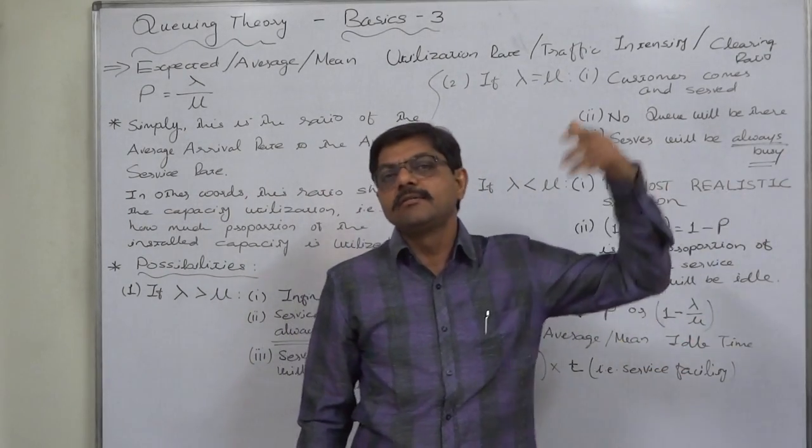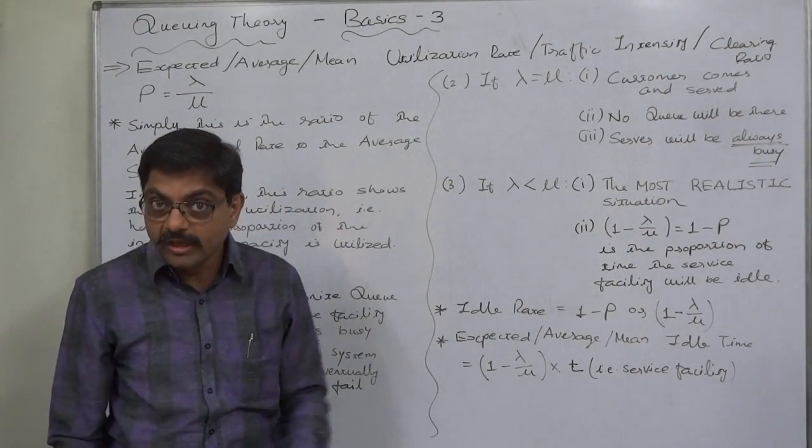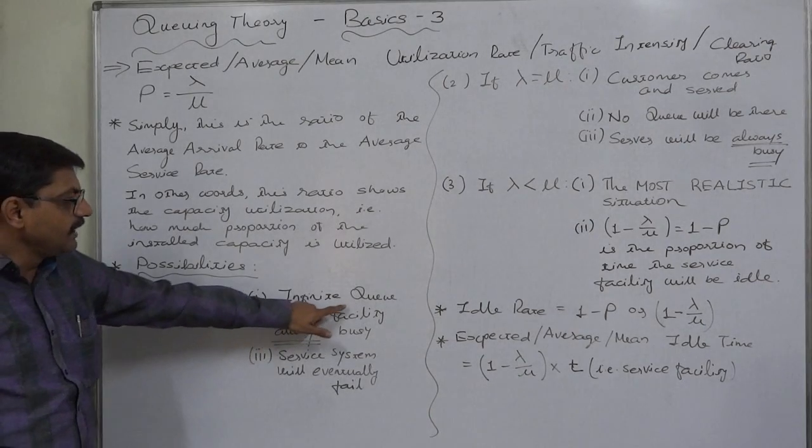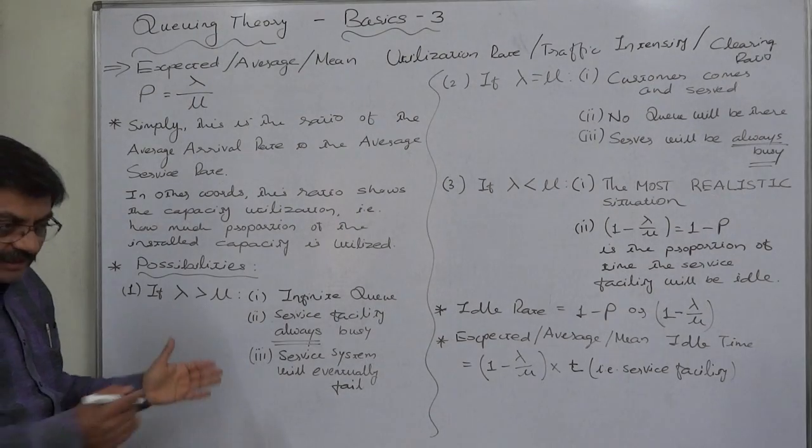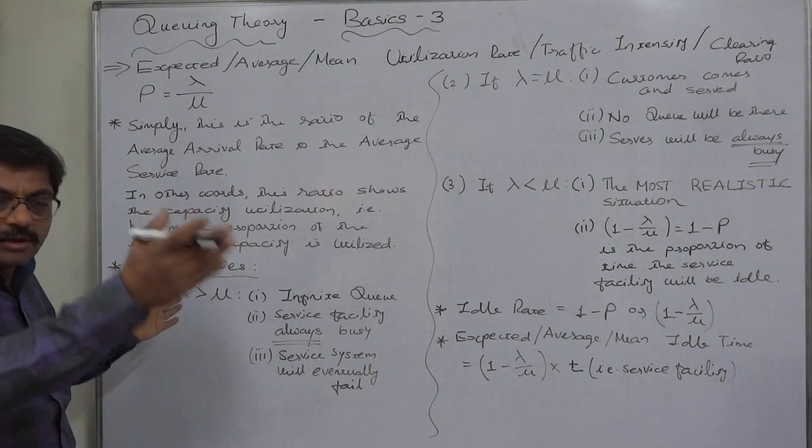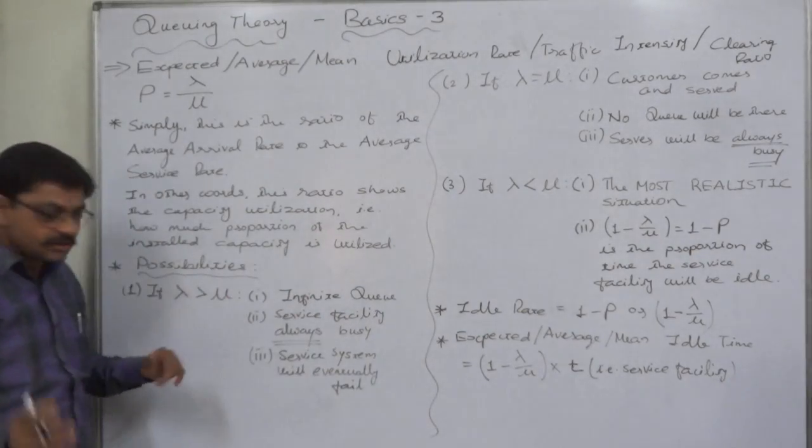And 15, 18, 21, 24 and so on infinitely. What can happen? There will be an infinite queue. No end of queue. Every hour three unserved customers are added to the queue of the unserved customers.